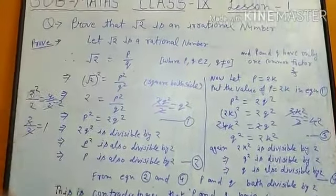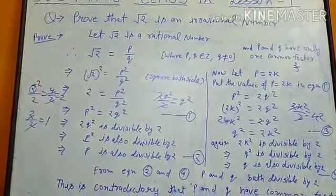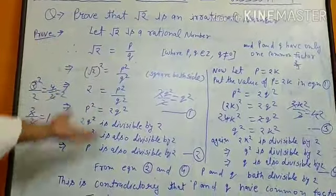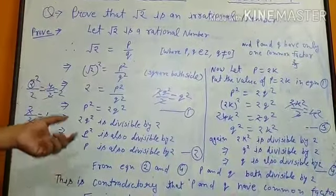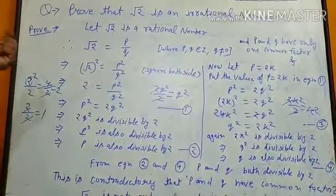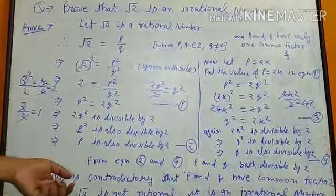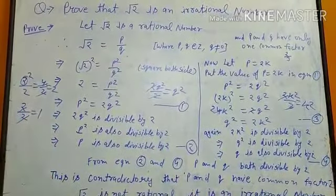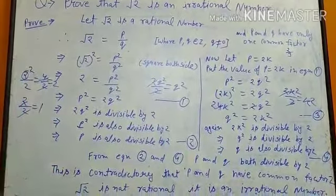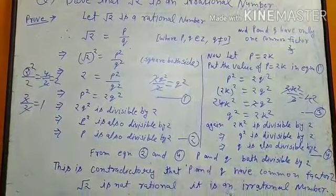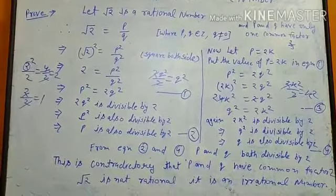Just like root 2, you can prove that root 3, root 5, and root 7 are irrational using the same process. So for homework, you have to prove root 3, root 5, and root 7. This will help you understand this topic clearly. Thank you.